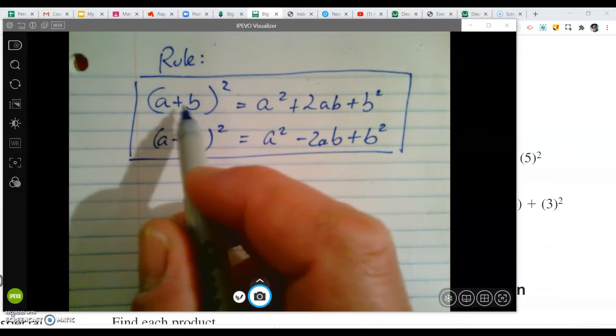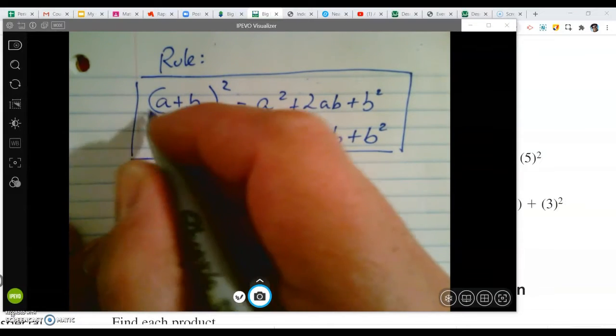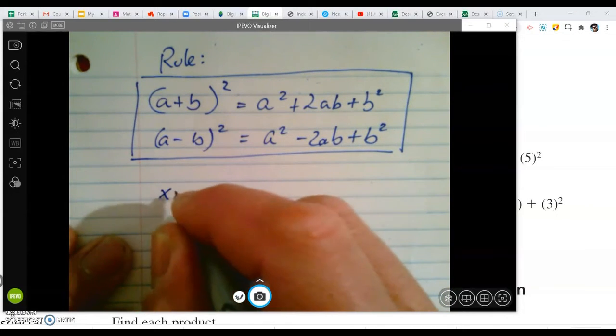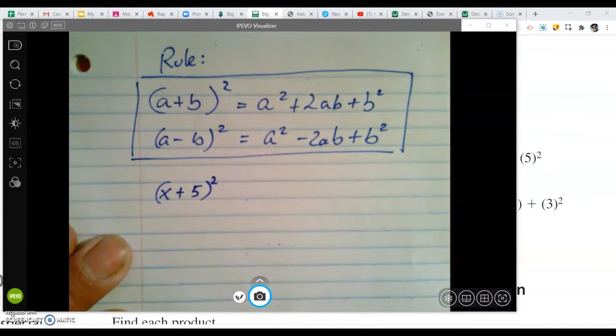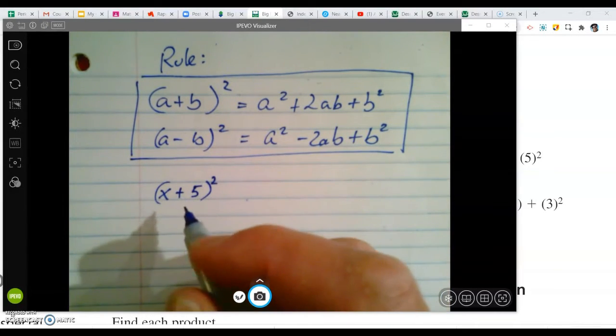So again, this is kind of confusing to see with just a's and b's. So we'll run through it with the numbers. Let's say (x + 5), for example. So instead of a and b, we have x and 5.